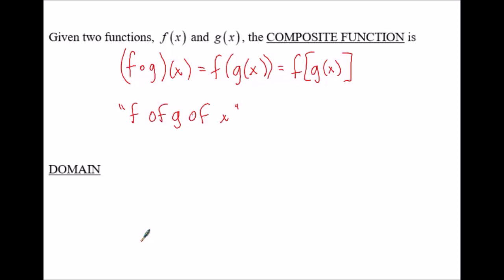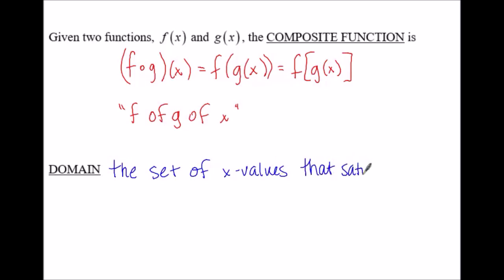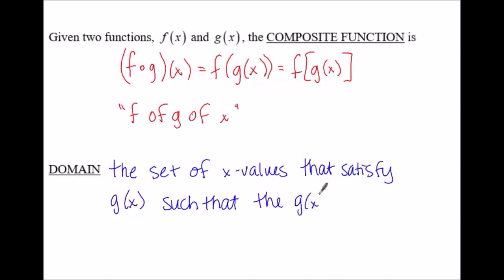The domain of a composite function — if you're talking about the composite function f of g of x — is the set of x values that satisfy g of x, such that the g of x values also satisfy f of x. We'll talk more about this toward the end of the notes.